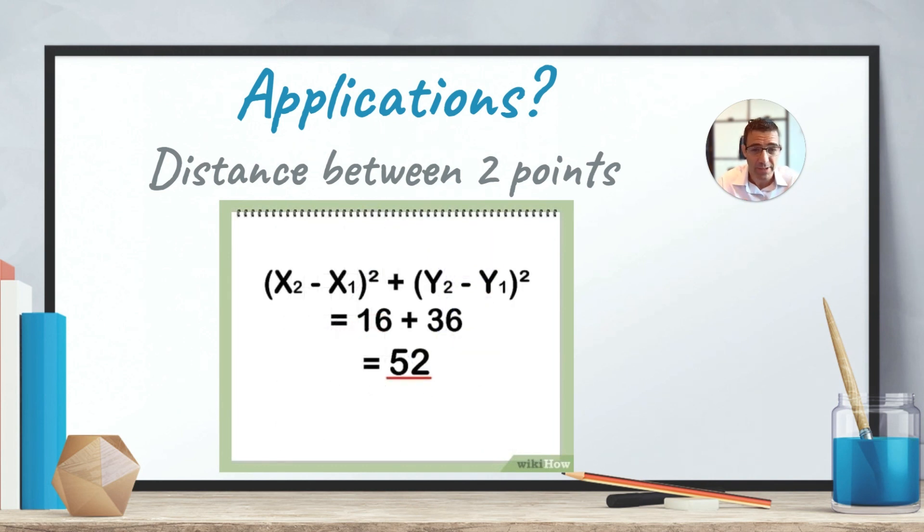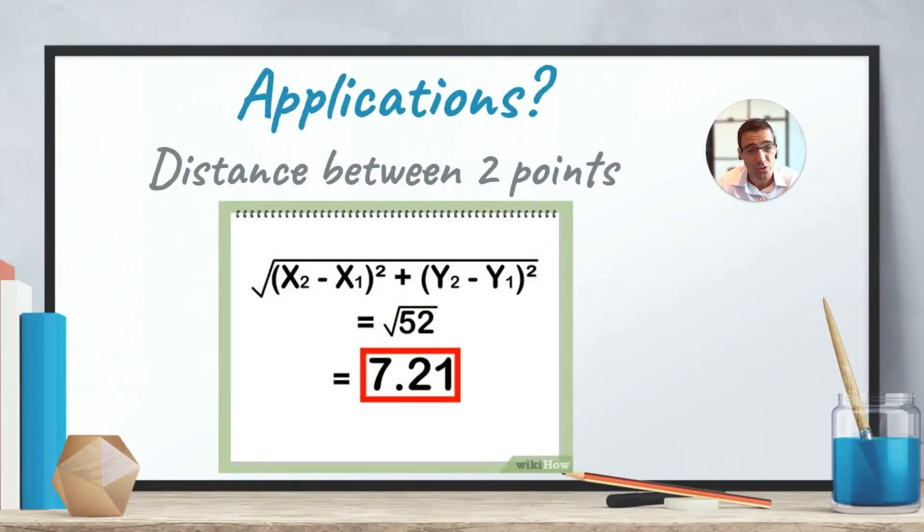So it's a very common application. And in this case, we'll get 16 plus 36, which is 52. Now, 52 is not the distance between the two points. It's the square of the distance between the two points. And of course, to finish this question, you need to do the square root of 52.